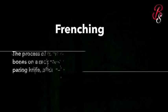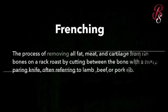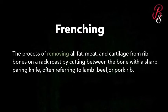The next term is 'Frenching.' Frenching is the process of removing all fat, meat, and cartilage from rib bones on a rack roast by cutting between the bones with a sharp paring knife. It often refers to lamb, beef, or pork.